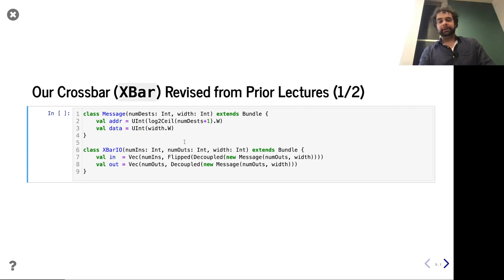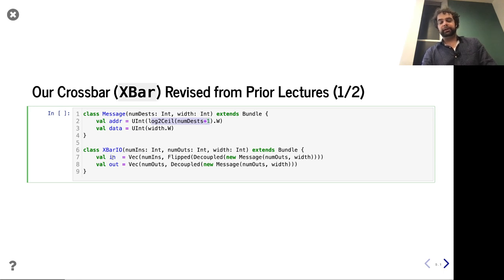Our crossbar has some key building blocks — we started from bundles. So we had, for example, a message bundle which is just some payload and an address. To create this, we need to know how many stations we're going to, so we can do some math on the addresses. The IO for our crossbar has some inports and some outports — those are just one decoupled message per direction, per host. We have a parameterized number of inports and a parameterized number of outports, and those get turned into vecs.